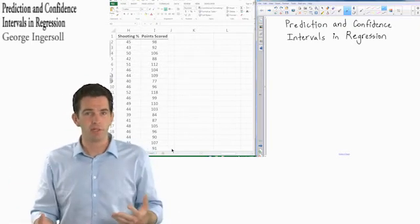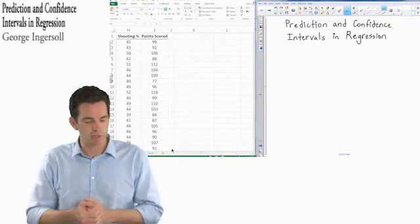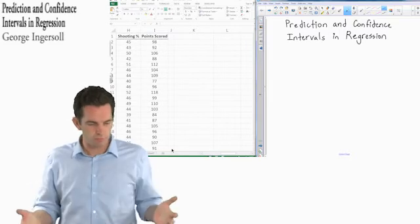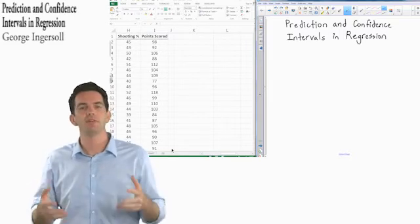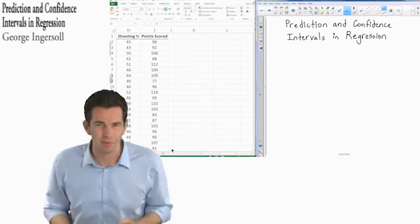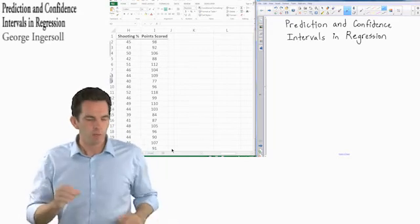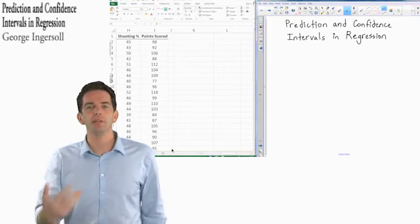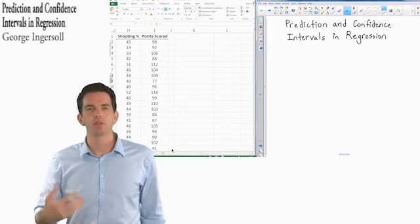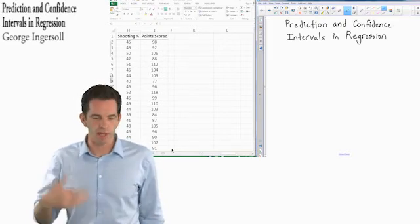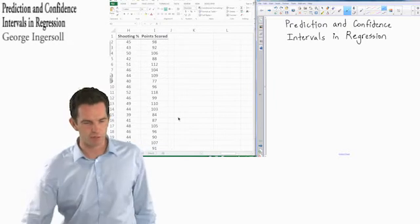At the end of our last video on analyzing regression outputs, we used shooting percentage to predict a value for points scored. We said what would be our predicted points scored using a shooting percentage of 47. Now, just as a quick refresher, let's get back to where we were before.